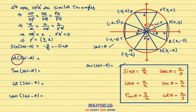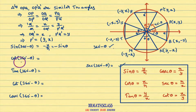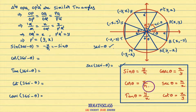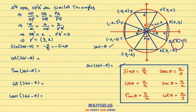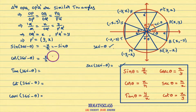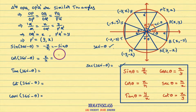Now we will see what is cos(360° − θ). Cos theta is defined as the x coordinate of the point divided by the radius of the circle. Cos(360° − θ) means the x coordinate of point B divided by the radius of the circle. The x coordinate of point B is x, divided by r, that equals x by r. Since x by r is cos theta, therefore cos(360° − θ) = cos θ.